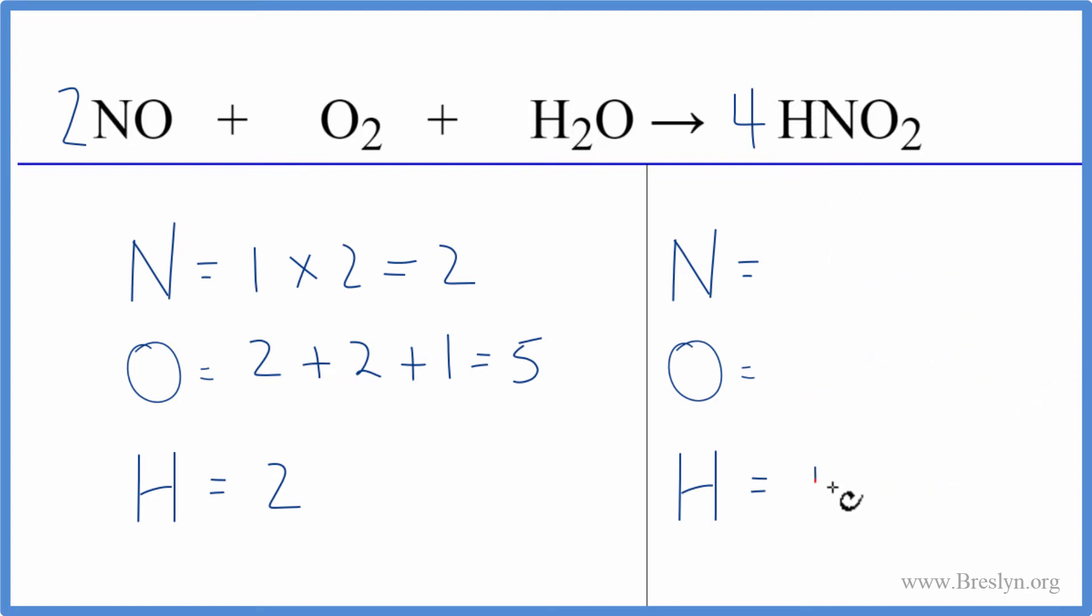We have 1 times 4 for the hydrogen, 1 times 4 for the nitrogen, that gives us 4, and then 2 times 4 for the oxygen, 8 oxygens.